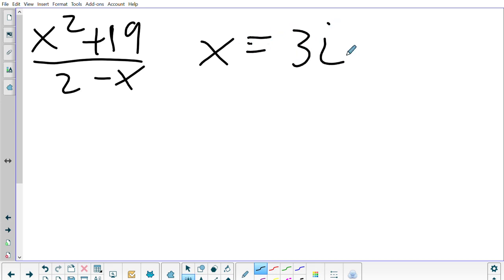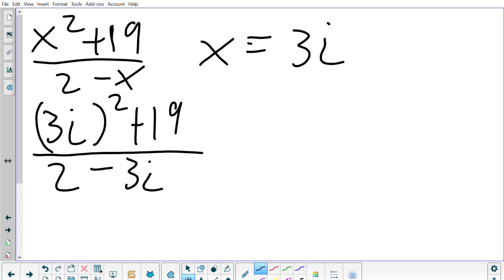Another example could be x squared plus 19 over 2 minus x. Evaluate x as if it was 3i. So what I'm going to do is do 3i squared plus 19 all over 2 minus 3i. 3 squared is 9 and then i squared going back to our chart is negative 1 plus 19 all over 2 minus 3i.